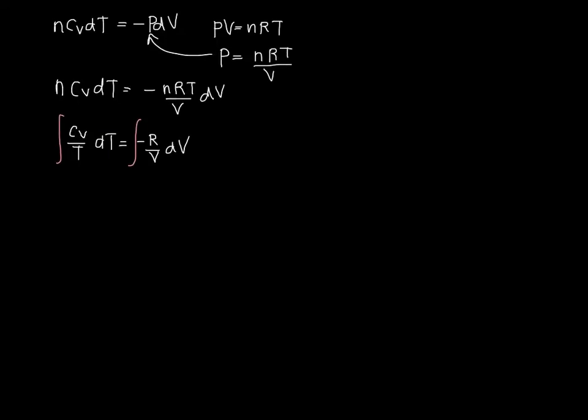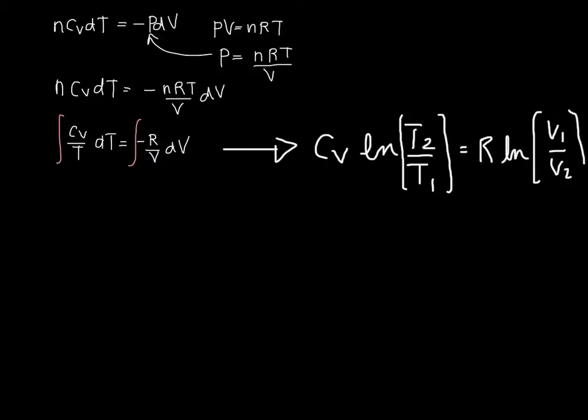And when we do that, we end up with Cv times ln of T2 over T1 equals R times ln of V1 over V2. And my negative sign went away because I changed the numerator and denominator of this V.